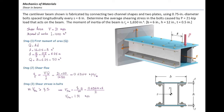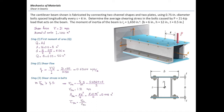This is the force that must be transferred by each connector on the top and bottom. The problem asks for the shear stress in the bolt. Shear stress is determined by dividing force over area. The area of a bolt is π times diameter squared over 4. Dividing the shear force by the bolt area, the average shear stress is 4.32 ksi. This is a very typical problem in built-up members.